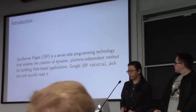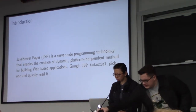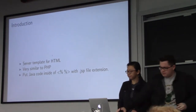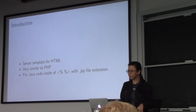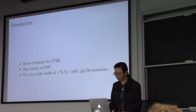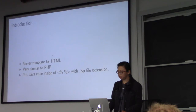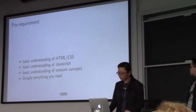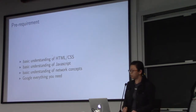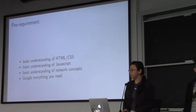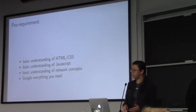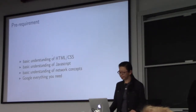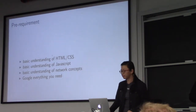So, what is JSP for basic programming? If you've ever used PHP or other web platforms, you may be familiar with it. The basic concept is to serve a template of HTML, and we put Java code inside such structures so you can integrate your phase two Java code. To start with, you need some basic understanding of HTML, CSS, and a little bit of JavaScript would be better. You also need a basic understanding of network stuff like HTTP, GET, and POST requests. And the most important thing — you need to Google whatever you need during your programming.